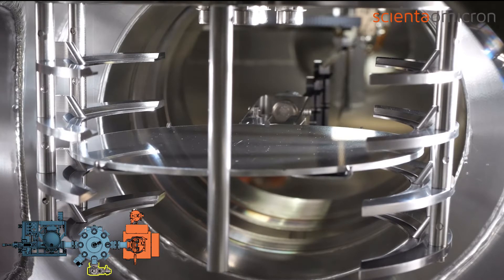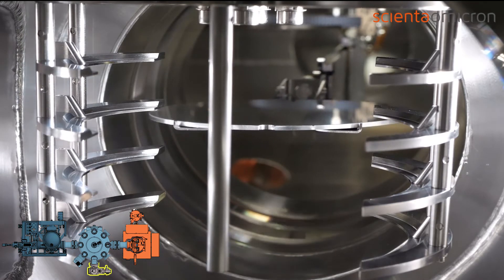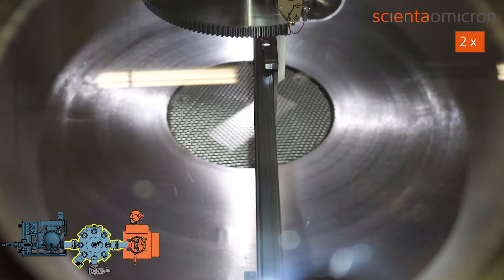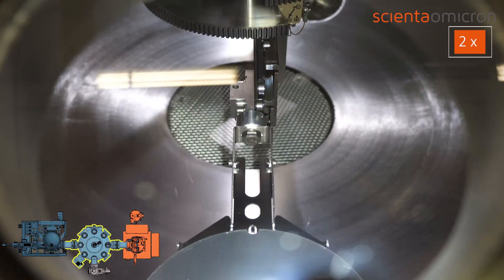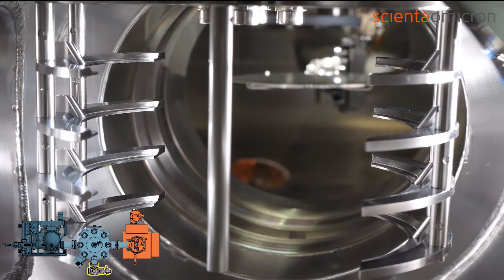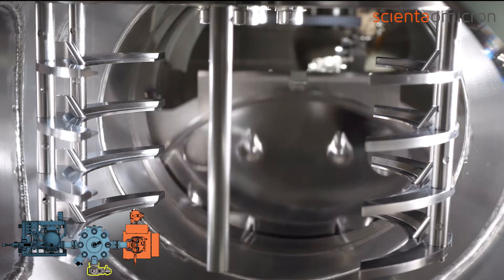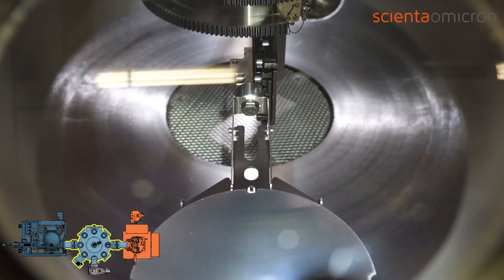The storage is then repositioned to a valid height to retract the robotic arm into the radial distribution chamber. When the arm is retracted, the UHV gate valve will close, and with that the unloading process is completed.